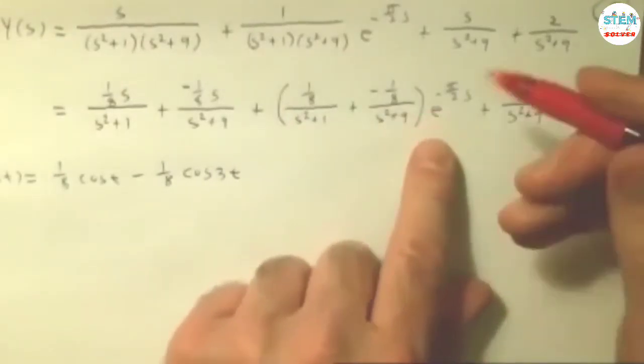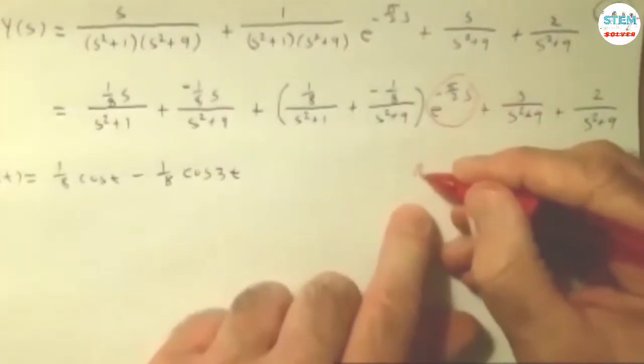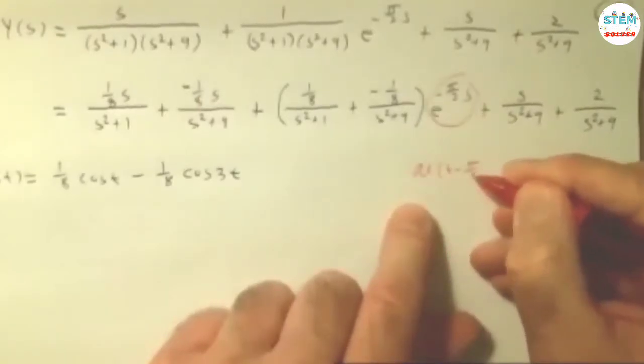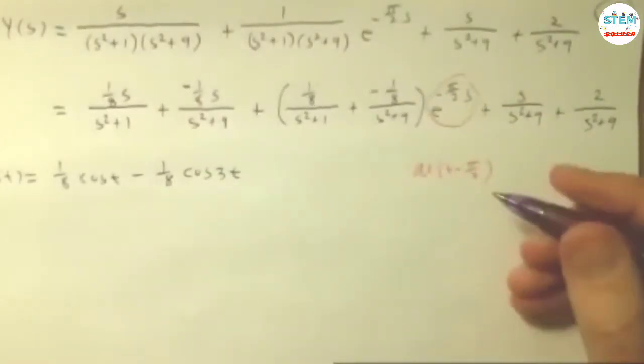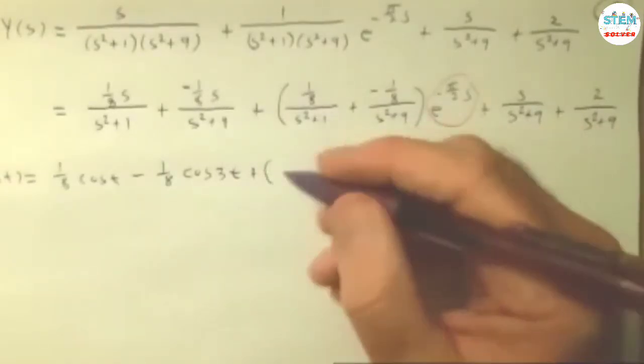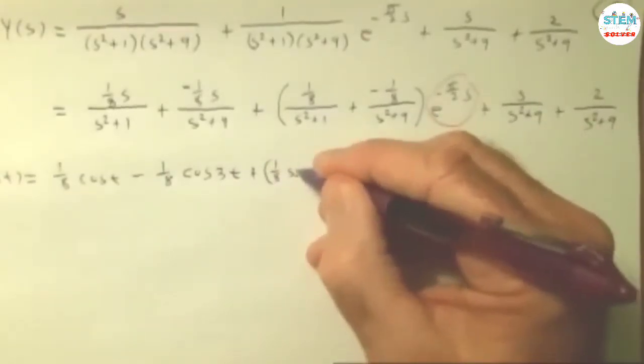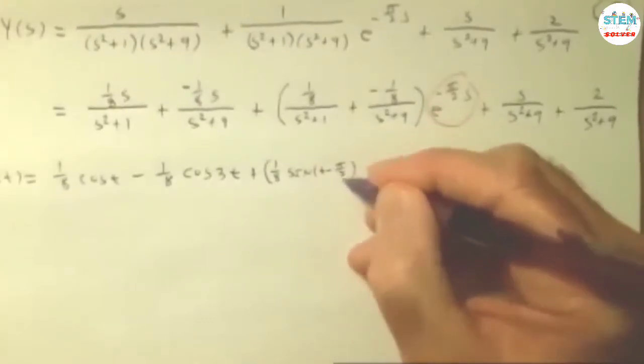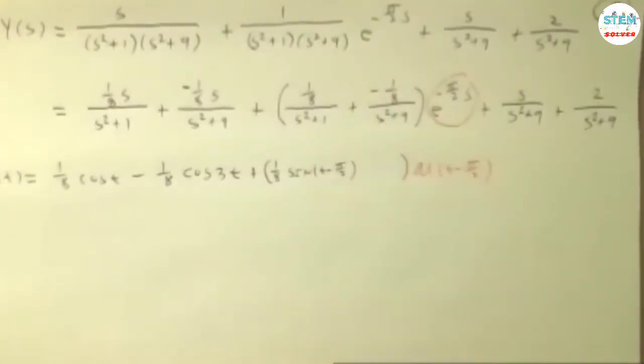This one, remember, is attached to an e. So for this one, very quickly, I realize that we're going to have u of t minus pi over 2. So when I go to this one here, remember, wherever I have t, it has to become t minus pi over 2. Well, this is sine. So it's sine of t minus pi over 2.